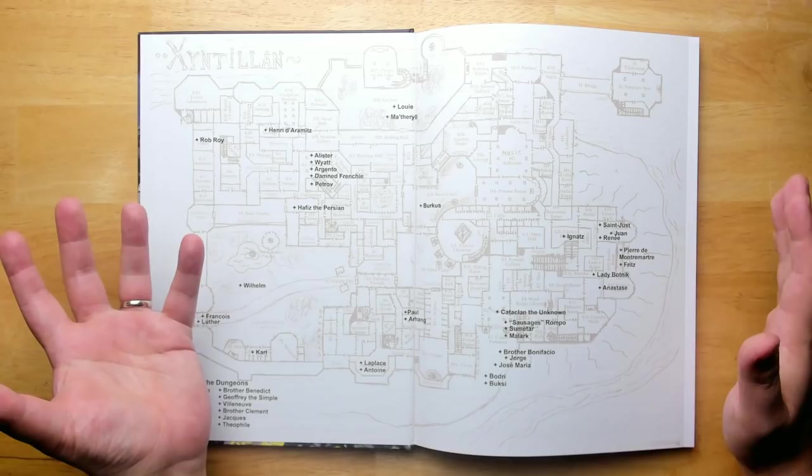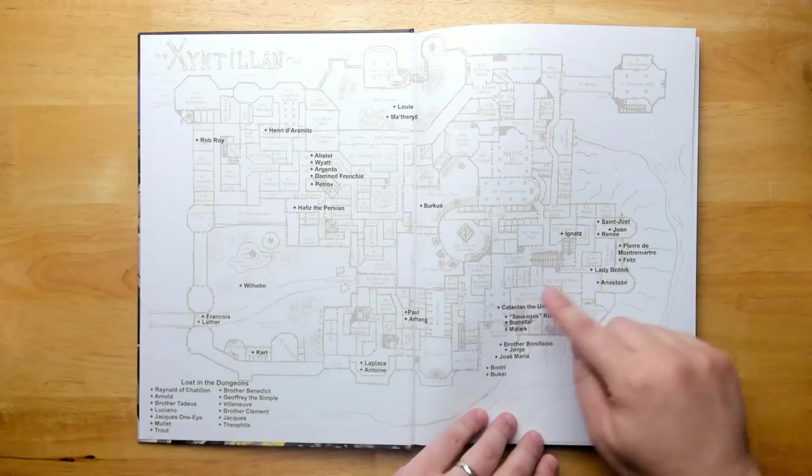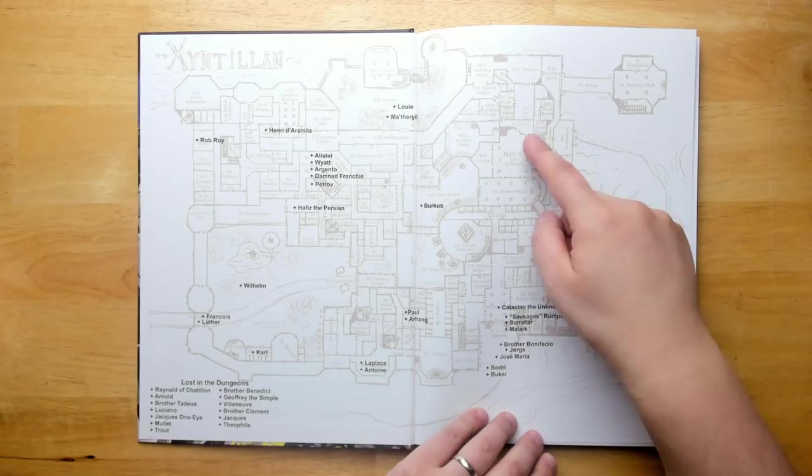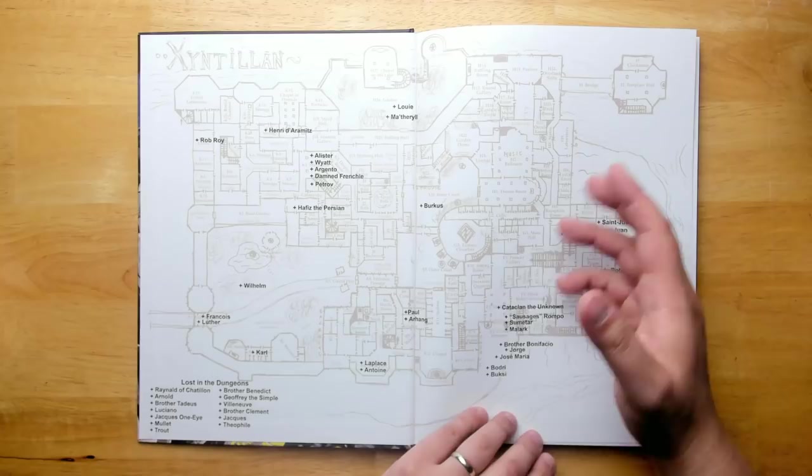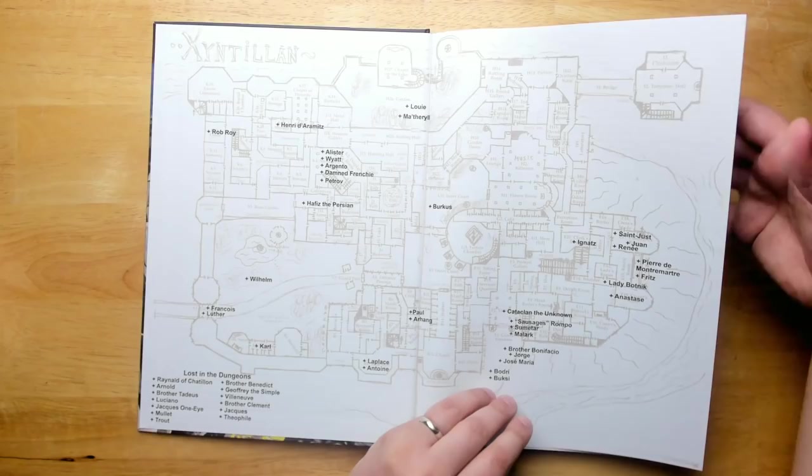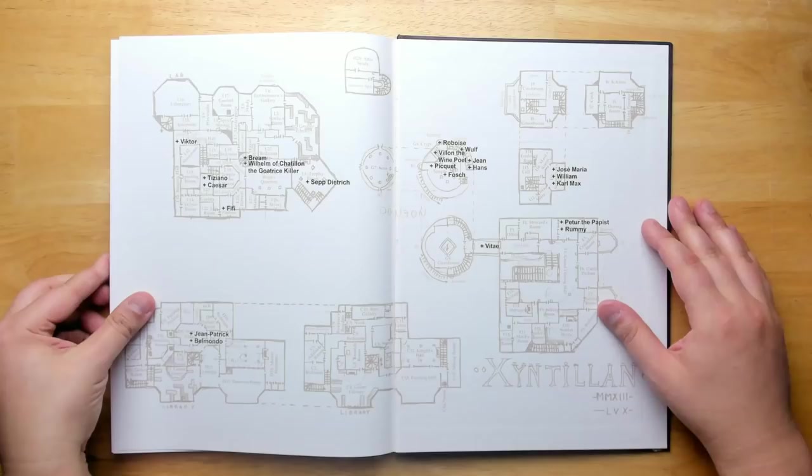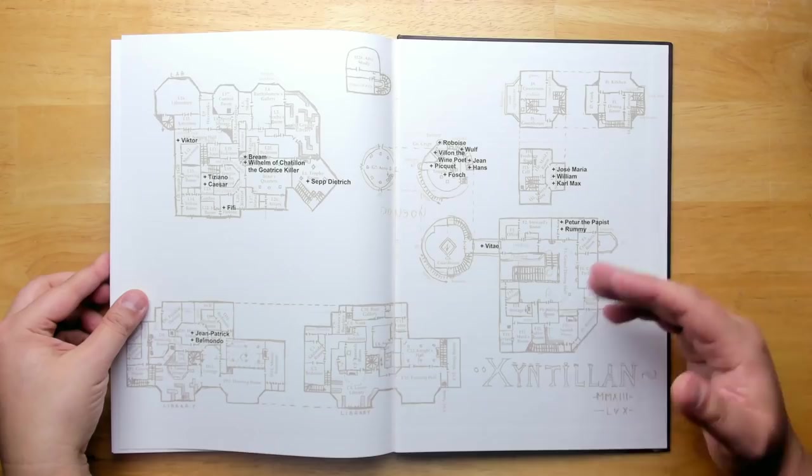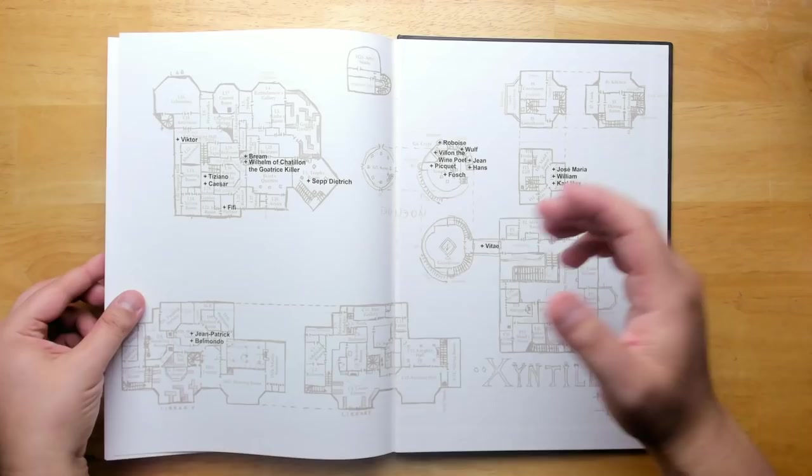I like how on the inside cover we have the endpapers being used for a large map. This is the main floor of Castle Xyntillan, and it has a lot of the main characters that you can run into also marked on the map. That's really nice. The rooms are not just numbered, they are also named, which is a great touch because it gives you a much clearer overview of what you're going to be getting into. If we look at the back endpapers, we see that we have the rest of the maps here. Here's the dungeon with some more characters that you can meet.